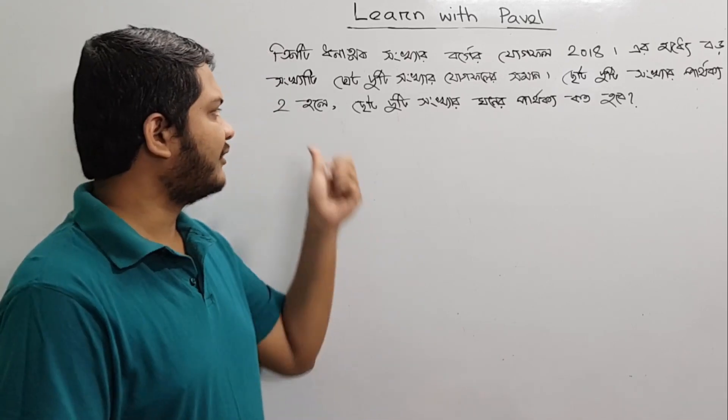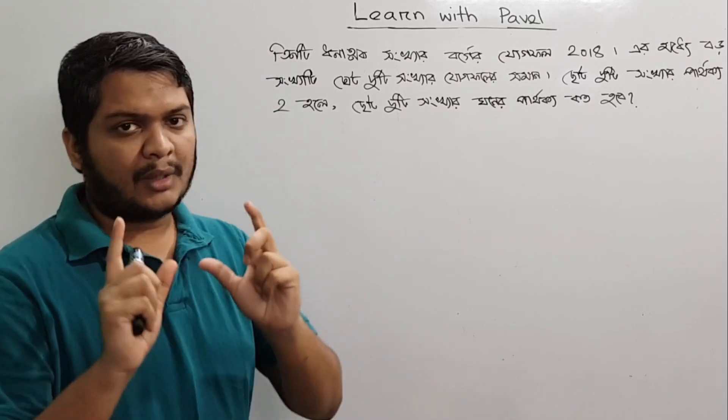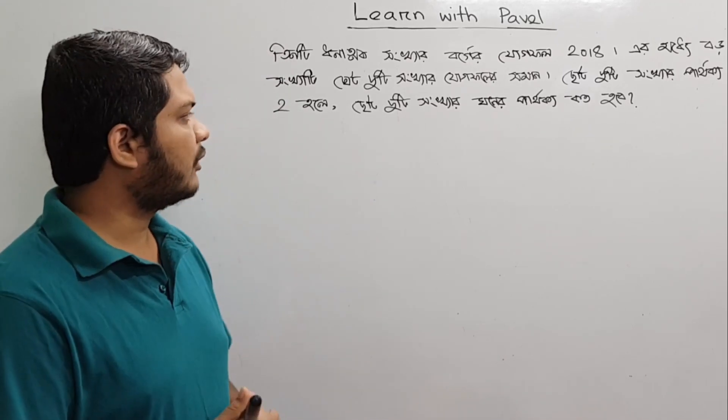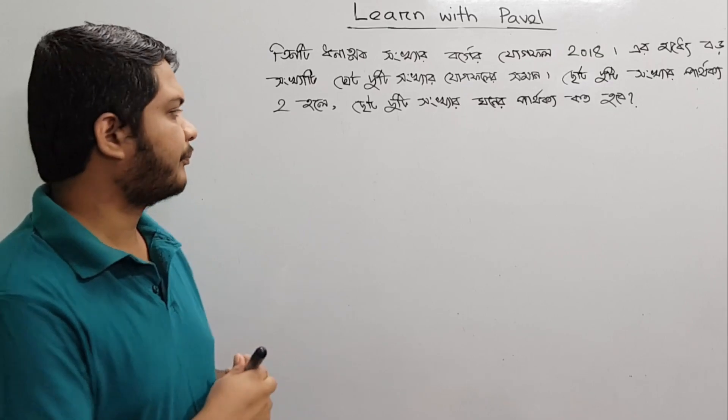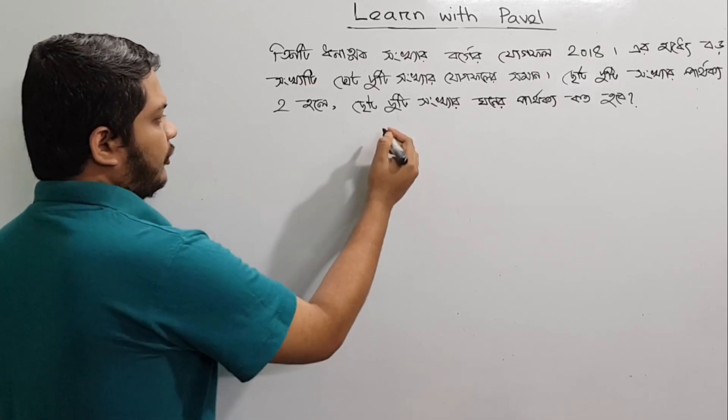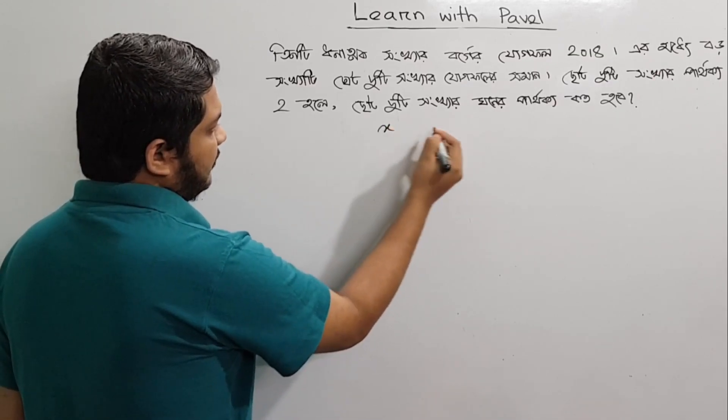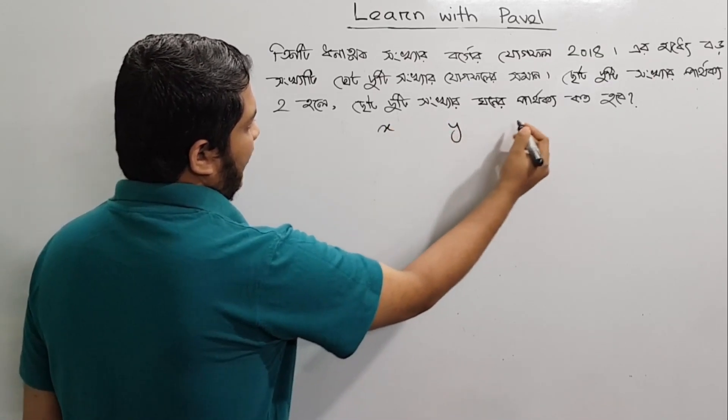So then x minus y is equal to 2. So I'm using x minus y minus x minus y is equal to 2. x, y,